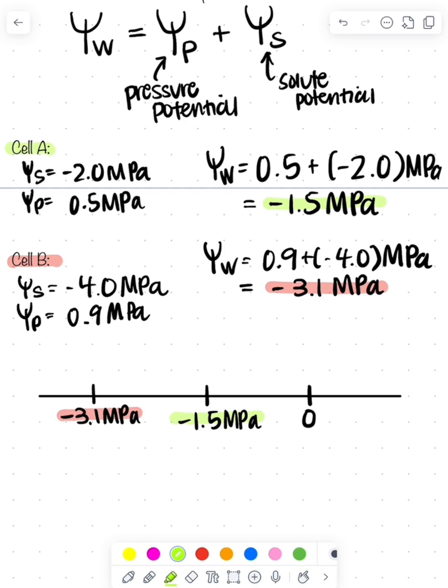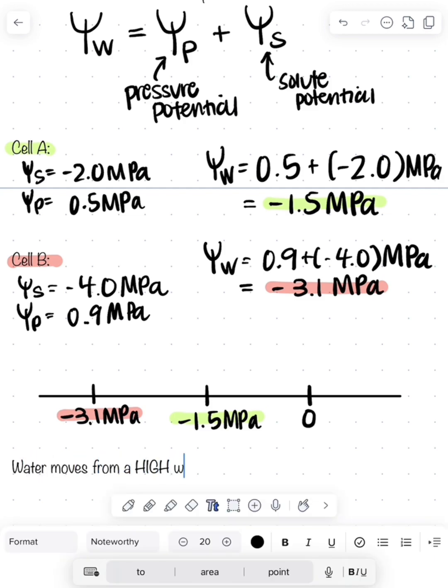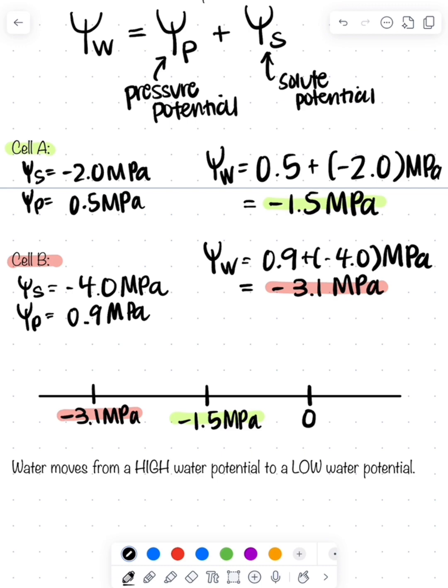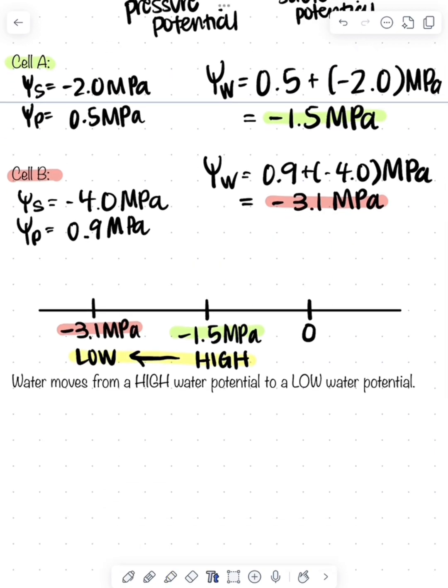If you look at this, you can see that negative 1.5 is higher or larger than negative 3.1. As a reminder, water moves from a high water potential to a low water potential. Negative 1.5 megapascals is my high water potential, and negative 3.1 megapascals is my low. So the water is going to move from the high to the low.